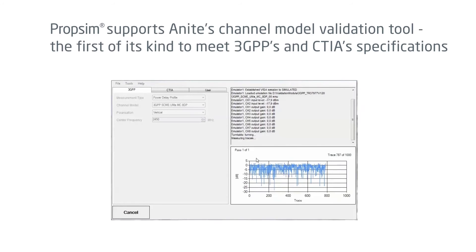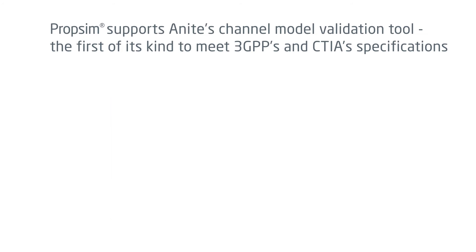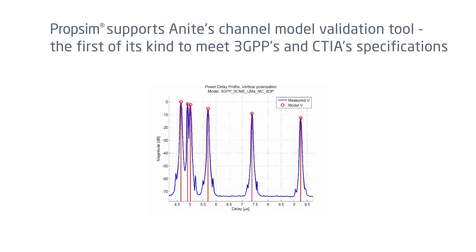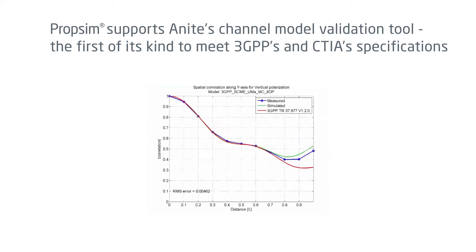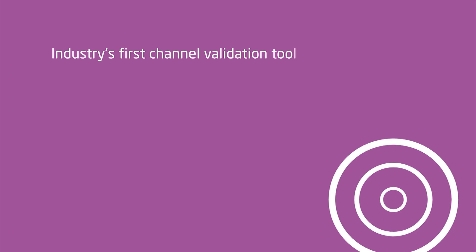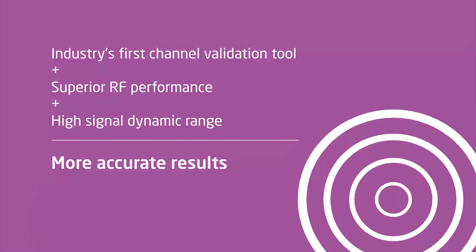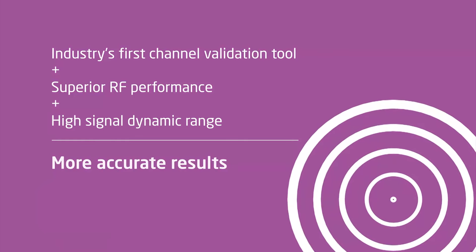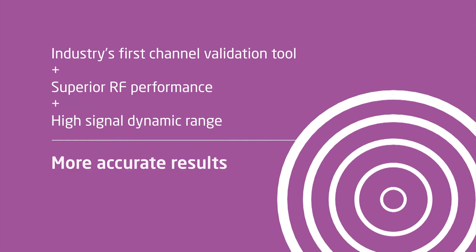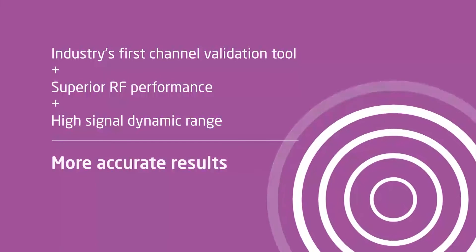PropSim supports Anite's channel model validation tool, the first of its kind to meet 3GPP's and CTIA's specifications. This, in combination with PropSim's superior RF performance and high-signal dynamic range, leads to more accurate results.